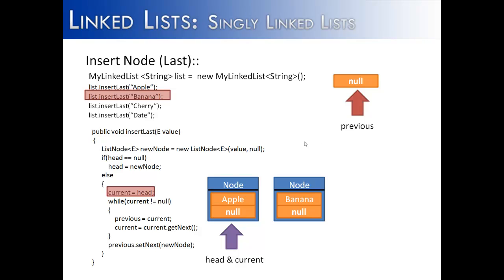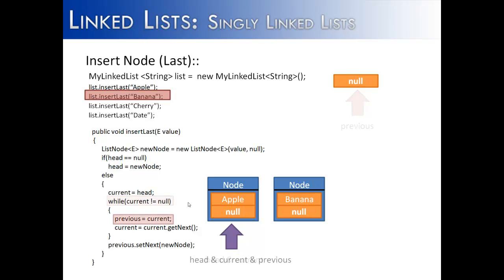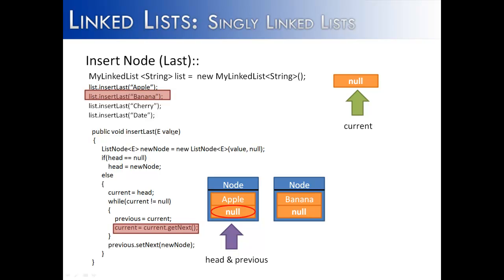We say current equals head, so current is no longer null — this node is both the head and current. We enter a while loop: while current is not equal to null. It's true, so we enter. We say previous equals current, so head, current, and previous are all the first node. Then current equals current.getNext — getNext is null, so current moves to null. The condition is no longer true, so we exit the loop.